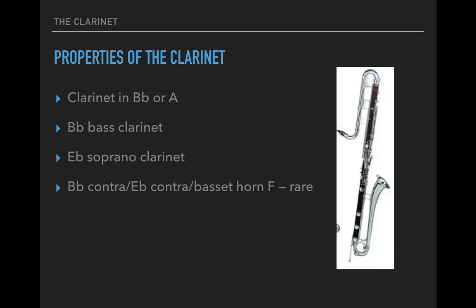Of course there's also the B-flat contra, E-flat contra, basset horn in F — these are all on the rarer side. The B-flat bass clarinet looks exactly the same on the page as the clarinet in B-flat, as we'll see. But the resulting pitch is an octave lower. You could relate this to the double basses or the contrabassoon — both do the same thing. The resulting pitch is an octave lower, but it is a transposing instrument.